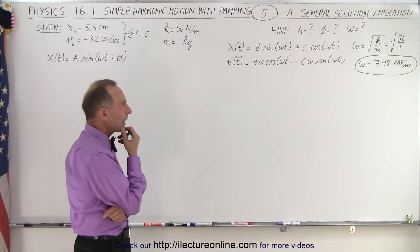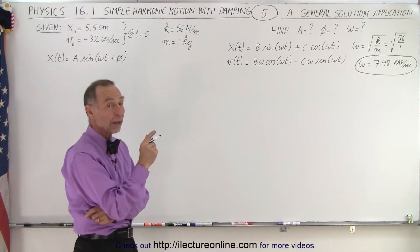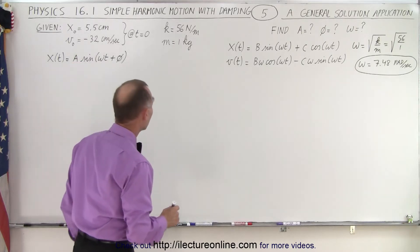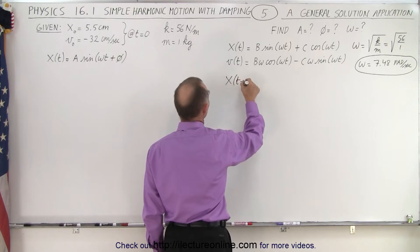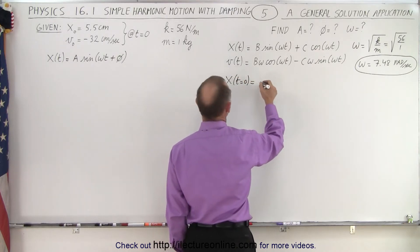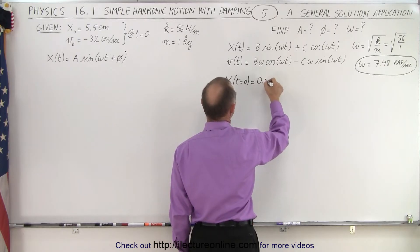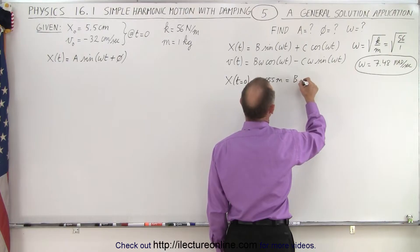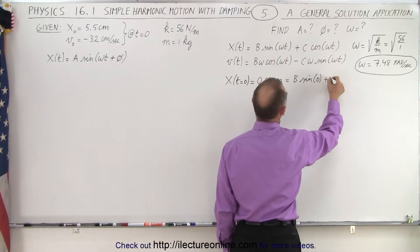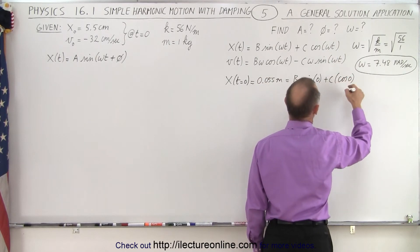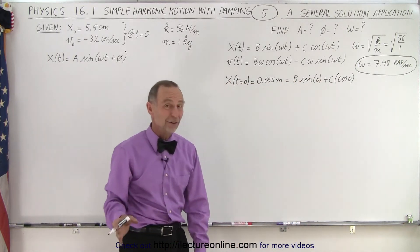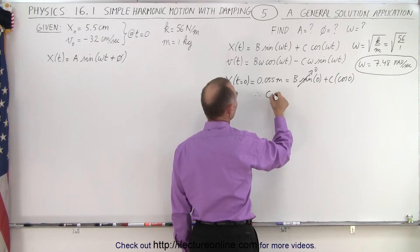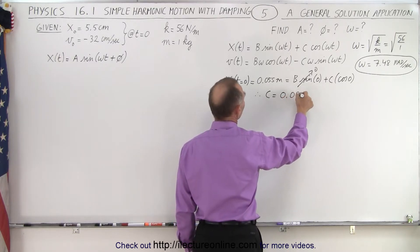Now we need to find the amplitude A, and we can do that if we find B and C. Notice we have some initial conditions for position and for velocity. So let's use position first. x when t equals zero is equal to 5.5 centimeters, converted to meters would be 0.055 meters. That would be equal to B times the sine of zero plus C times the cosine of zero. The sine of zero is zero, so this disappears. The cosine of zero is 1, which means that C is equal to 0.055 meters.